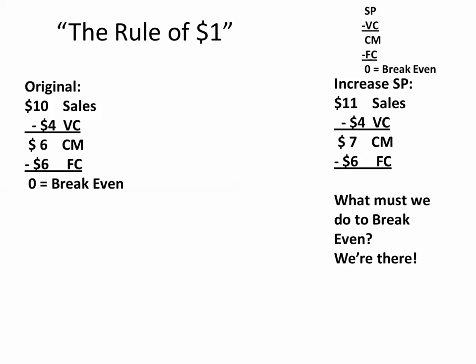Lastly, if we increase that sales price by one dollar — so our sales go from ten dollars to eleven dollars — then with our variable cost of four dollars, our contribution margin went up. So if we're going to break even with that increased sales price, as long as we can sell the same number of units, we're there. That's the rule of one: if you ever encounter a problem like this, just change the number by one dollar and see how it impacts the other numbers in the analysis.